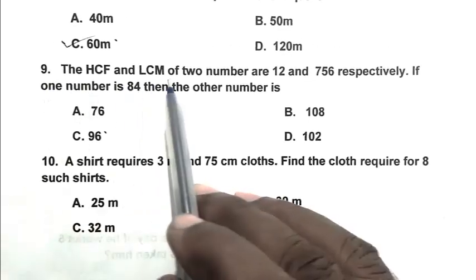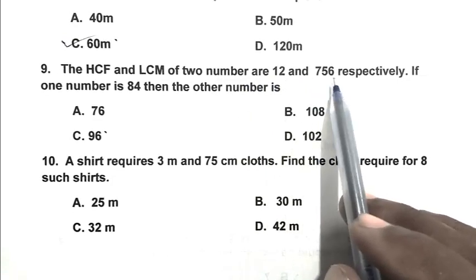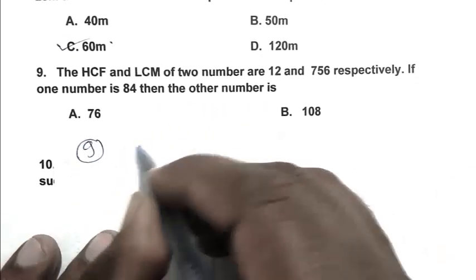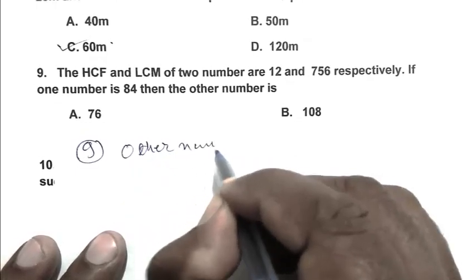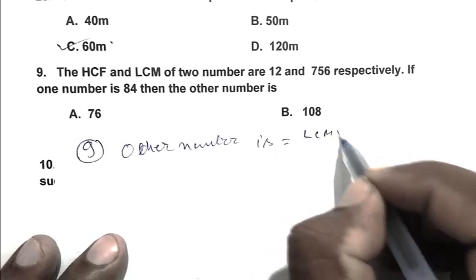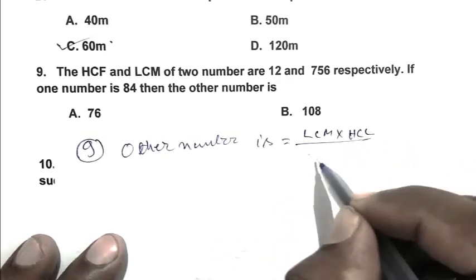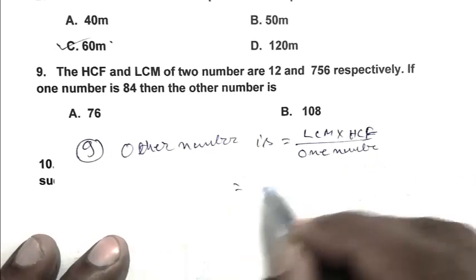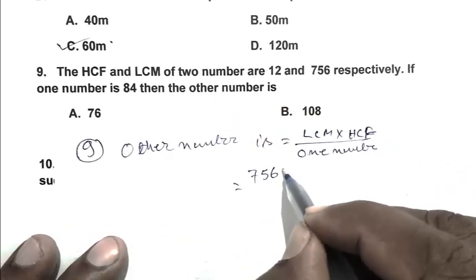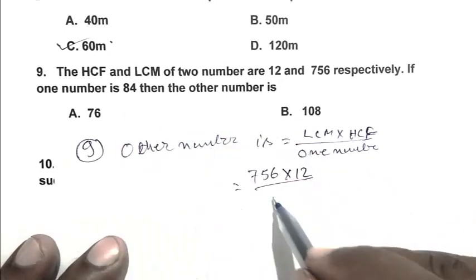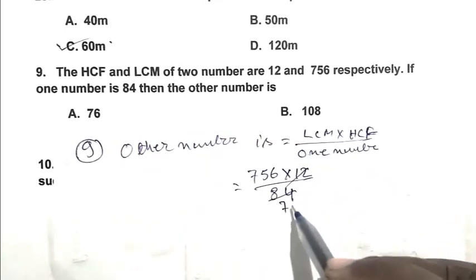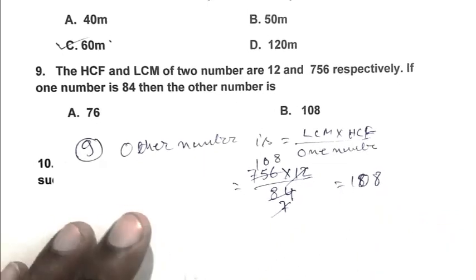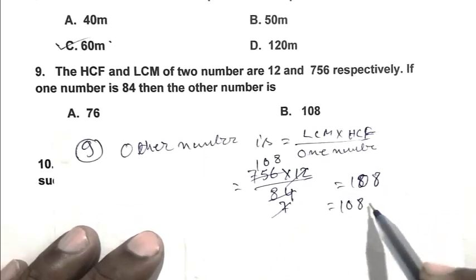Question number nine: the HCF and LCM of two numbers are 12 and 756 respectively. If one number is 84, find the other number. The other number equals LCM multiplied by HCF divided by the first number, that is 756 multiplied by 12 divided by 84, which gives 108. B is the right answer.